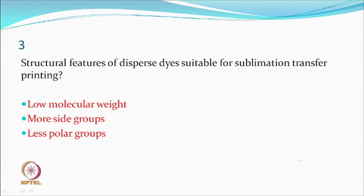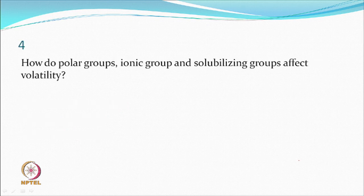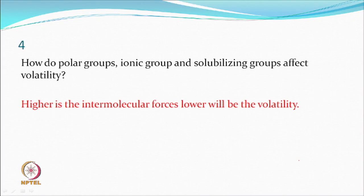Molecular weight, side groups, and fewer polar groups are all responsible for sublimation. Ionic groups and other polar groups, if present in less quantity, help in sublimation transfer. Something that sublimes obviously has weak intermolecular forces. Polar, ionic, and solubilizing groups reduce volatility — higher intermolecular forces mean lower volatility.